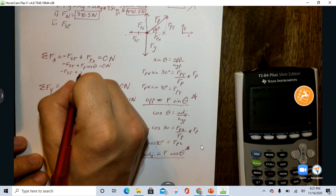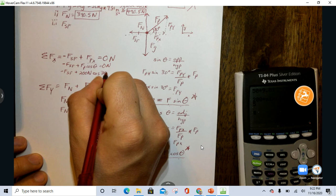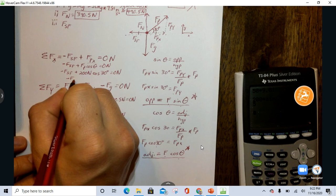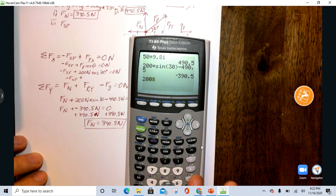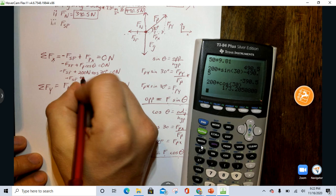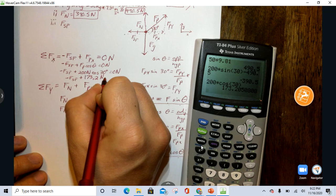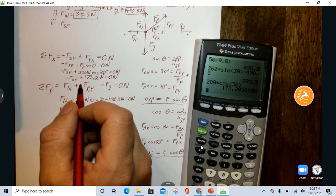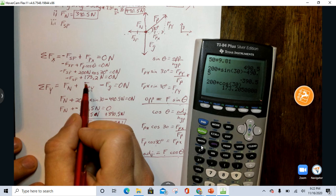Negative force of static friction plus 200 newtons times cosine of 30 is 173.2 Newtons equals zero newtons. Check my answers against my key. Yep.